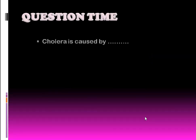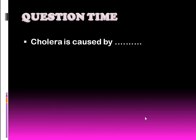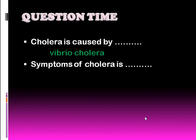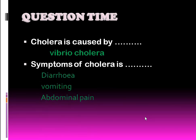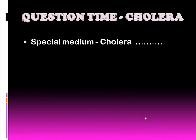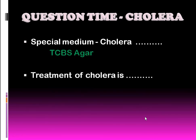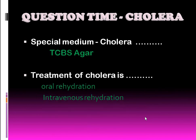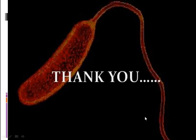Question time: cholera is caused by Vibrio cholerae. Symptoms of cholera are diarrhea, vomiting, abdominal pain, mild fever, and severe dehydration. The special medium for cholera is TCBS agar. Treatment is oral rehydration, intravenous rehydration, and antibiotic therapy. Thank you.